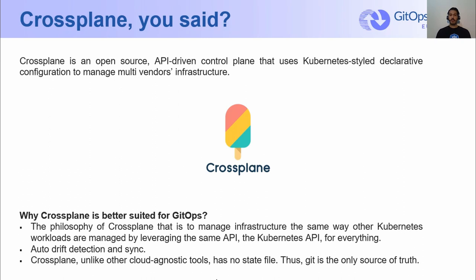Let's get to the chase and talk about Crossplane. Crossplane, a cloud-native infrastructure as code tool, is a CNCF incubating project that is redefining how to manage infrastructure using the Kubernetes API via custom resource definitions, abbreviated as CRDs, and controllers. With Crossplane, if at any point the actual state diverges from the desired state, it gets corrected based on a control plane reconciliation. The reason why Crossplane fits in the GitOps realm boils down to the philosophy of Crossplane — that is to manage infrastructure the same way we manage our Kubernetes workloads, by leveraging a ubiquitous language, Kubernetes object manifests, which is becoming lingua franca for DevOps, together with the ability to use the same Kubernetes API for everything.